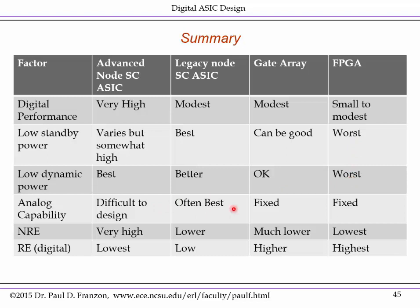Analog capability is best suited to standard-cell ASICs, though some analog functions can be built in advanced nodes — they're difficult to design so people increasingly avoid them. Gate arrays are very highly analog, but the functionality is fixed; a general-purpose transistor array gives modest capabilities, but you're best off using the fixed functions provided. FPGAs have a few analog-like functions — high-speed IO, phase-lock loops — but not much. Non-recurring engineering cost is highest for standard-cell ASICs and lowest for FPGAs. Recurring engineering cost for digital is the reverse. I hope you enjoyed this supplementary module — thank you for your attention.